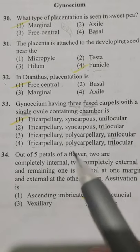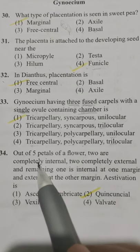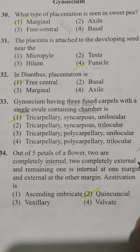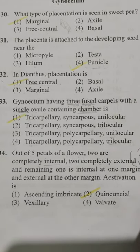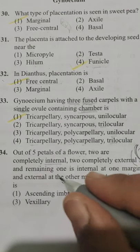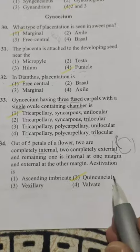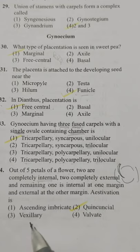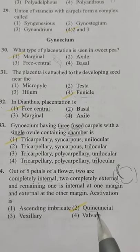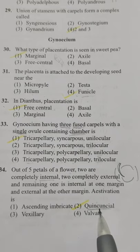Out of 5 petals of a flower, 2 are completely internal, 2 are completely external, and the remaining one is internal at one margin and external at the other. What kind of aestivation is this? Options: Option 1 ascending imbricate, Option 2 quincuncial, Option 3 vexillary, Option 4 valvate. This is quincuncial aestivation — Option 2.